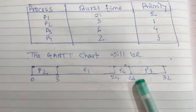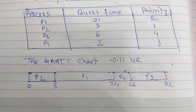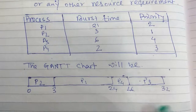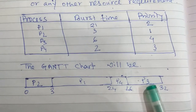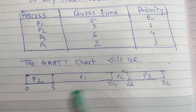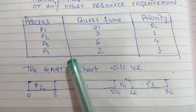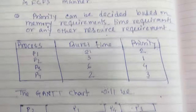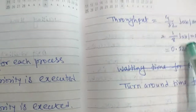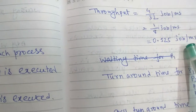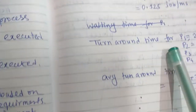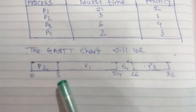Now let us calculate the throughput. Throughput means number of jobs per unit time. Here the number of jobs is 4 and the total time is 32. So throughput is 4 divided by 32 jobs per millisecond, which equals 0.125 jobs per millisecond.